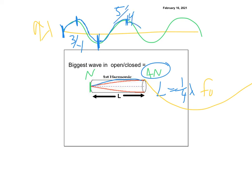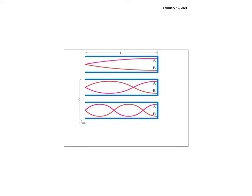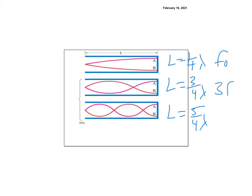The pattern for open-closed is one-fourth, three-fourths, five-fourths, seven-fourths — you go one, three, five, seven, skipping even numbers. So L equals one-fourth lambda is f-naught, L equals three-fourths lambda is 3f-naught, and L equals five-fourths lambda is 5f-naught. You only get odd harmonics. The next would be seven-fourths, then nine-fourths, and so on. The wave speed v still stays the same.